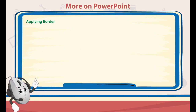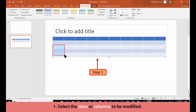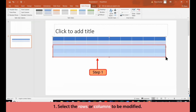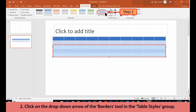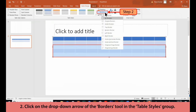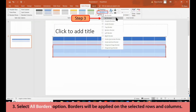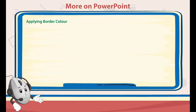Applying Border. Follow these steps to apply border on the table. 1. Select the rows or columns to be modified. 2. Click on the drop-down arrow of the Borders tool in the Table Styles group. 3. Select the All Borders option. 4. Borders will be applied on the selected rows and columns.